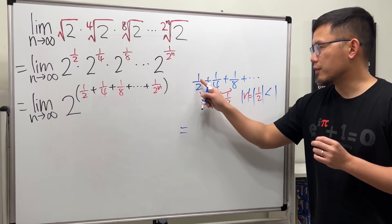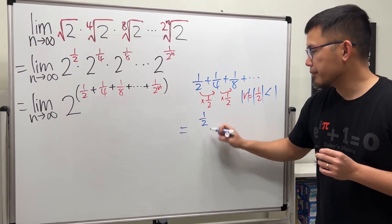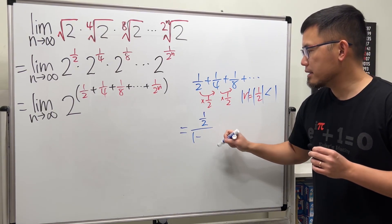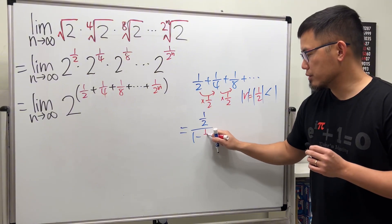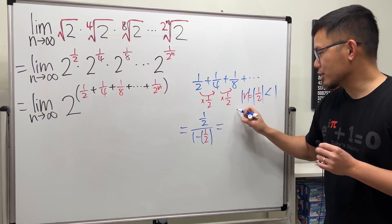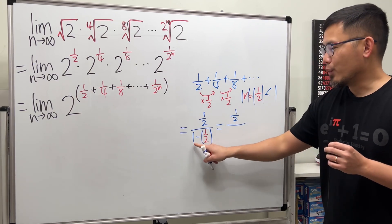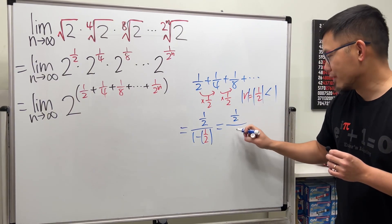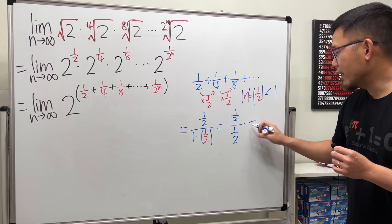And it will converge to the first term, which is 1 half, over 1 minus the common ratio, which is also 1 half. And then if you work this out, this is just 1 half on the top over 1 minus 1 half, which is 1 half. So 1 half over 1 half, we have 1.